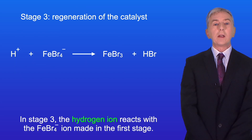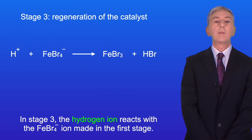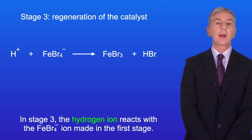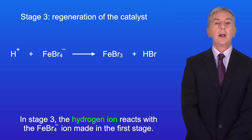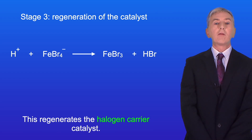In stage three, the hydrogen ion reacts with the FeBr4- ion made in the first stage, and this regenerates the halogen carrier catalyst.